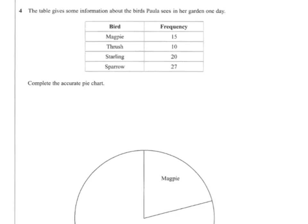So we need to work out the angle that each bird will take up. First of all, to do this, we need to add our frequencies together to see what they come to. And they come to 72 birds.